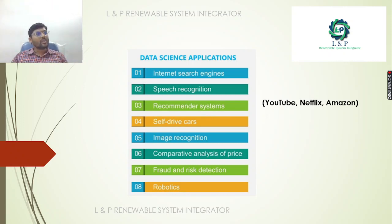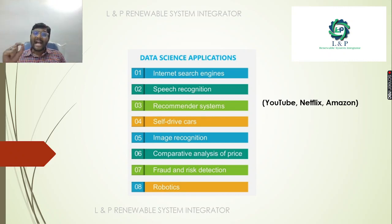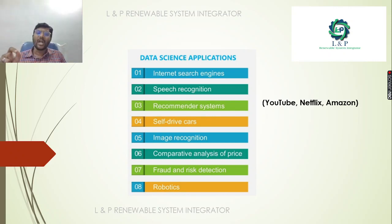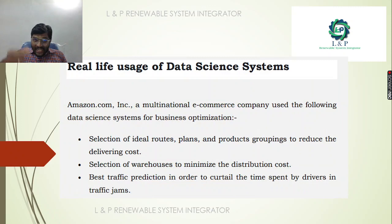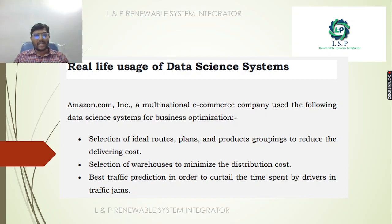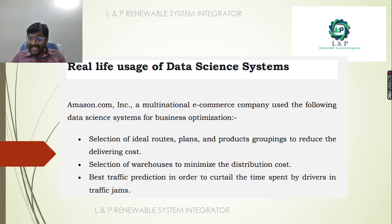Data science is used in internet search engines, speech recognition, recommender systems like YouTube, Netflix, and Amazon, self-driving cars, image recognition, comparative price analysis, fraud and risk reduction, and robotics. In real life, Amazon is a multinational e-commerce company using data science for business optimization.